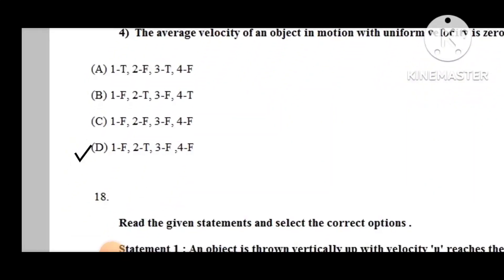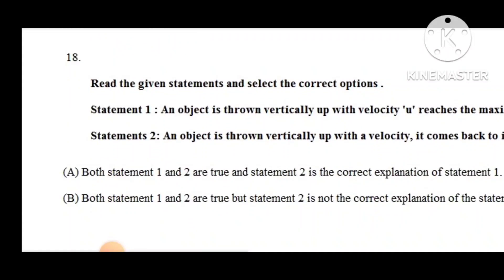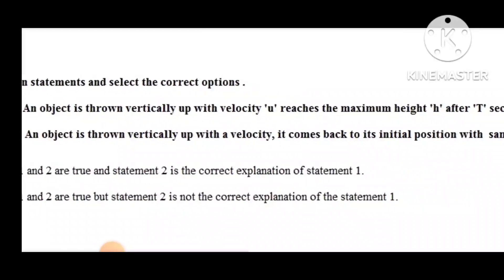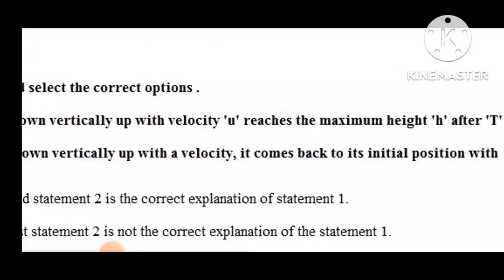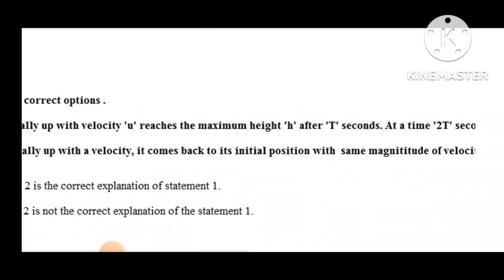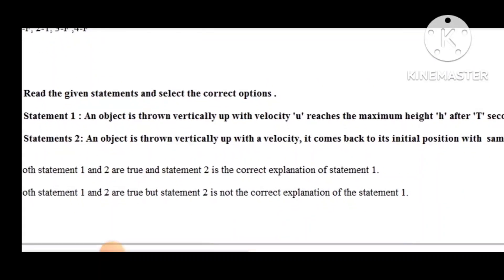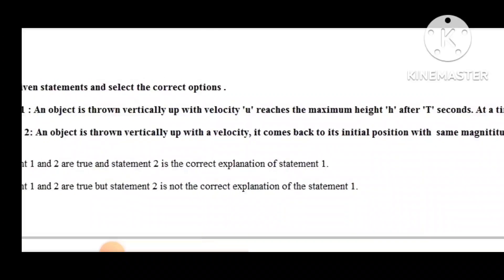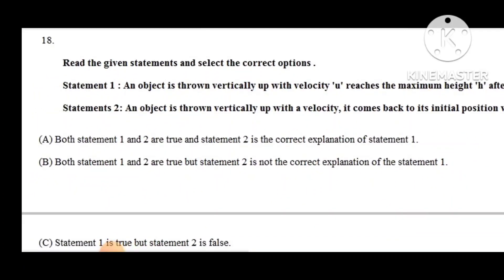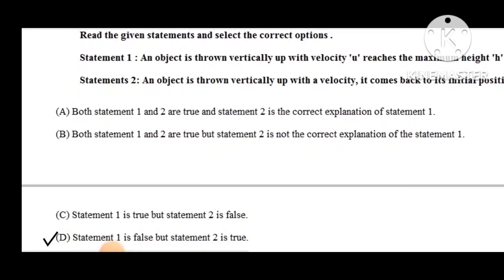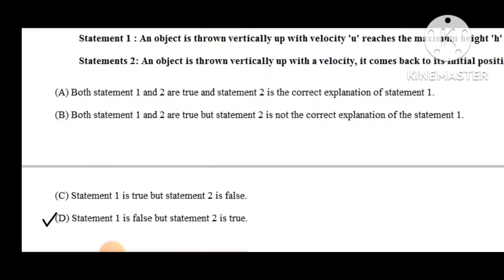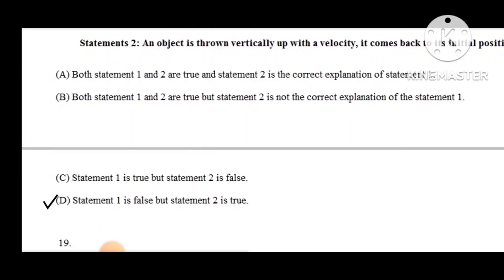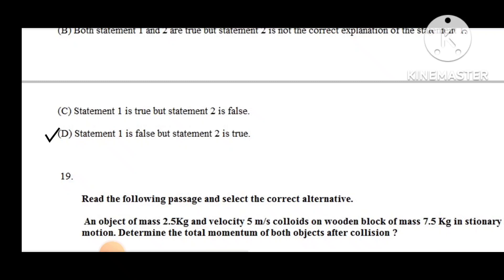Question number 18: Statement 1 — an object is thrown vertically up with velocity u, reaches maximum height h at time t seconds. Statement 2 — an object thrown vertically up comes back to its initial position with the same magnitude of velocity. Options: A) both statements true and statement 2 correctly explains statement 1; B) both true but statement 2 is not the correct explanation of statement 1. The correct option is D — statement 1 is false but statement 2 is true.